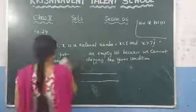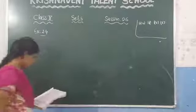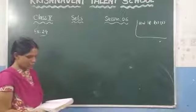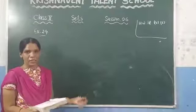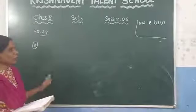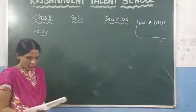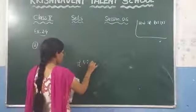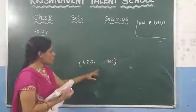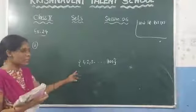Now see the second question: they have given some sets and you need to tell whether they are finite or infinite. The first question asks about the set of months in a year — you know that there are twelve months in a year and we can count them, so it is a finite set. The second one is the set {1, 2, 3, ..., 100} — we can observe that 100 elements are present, and since we can count them, it is a finite set.